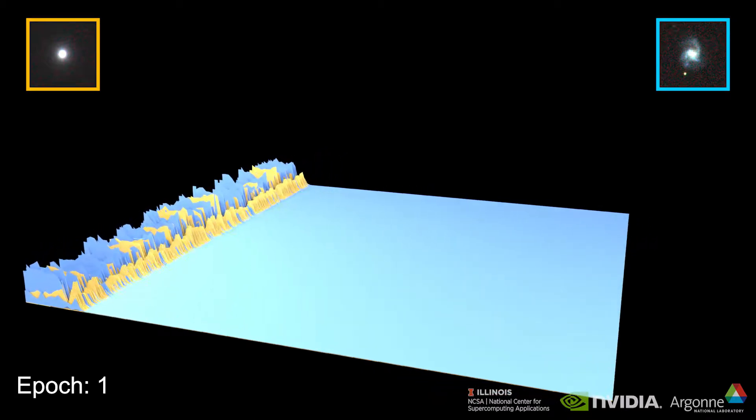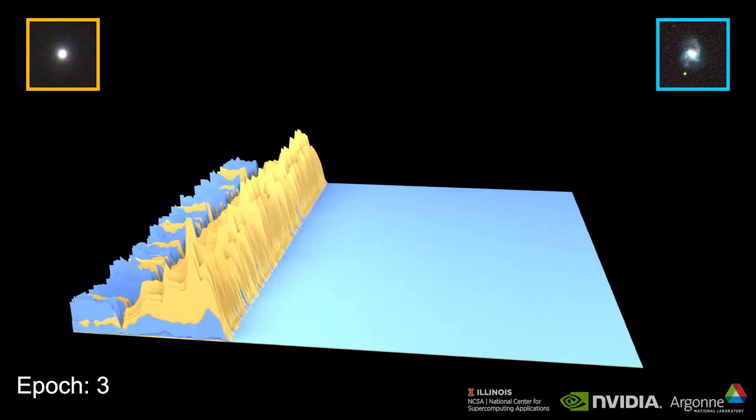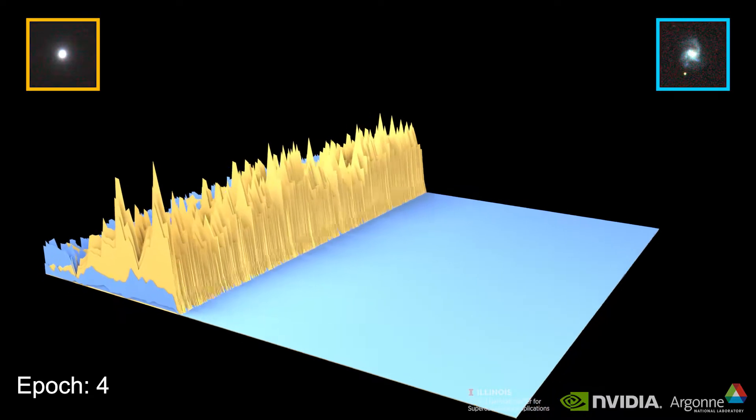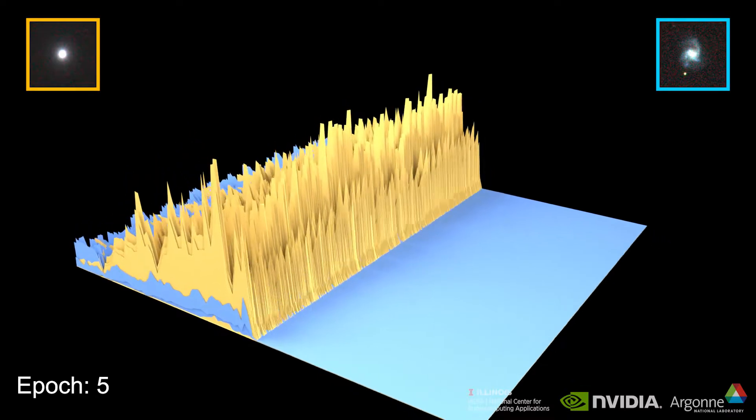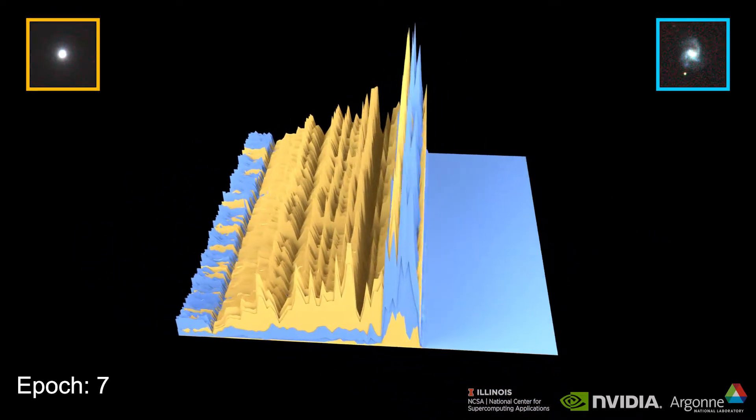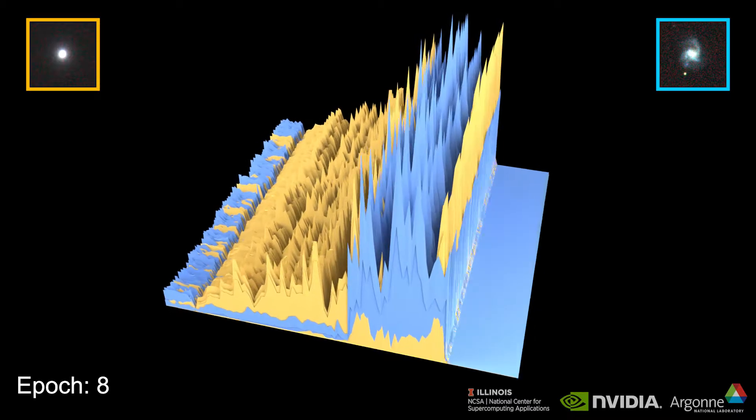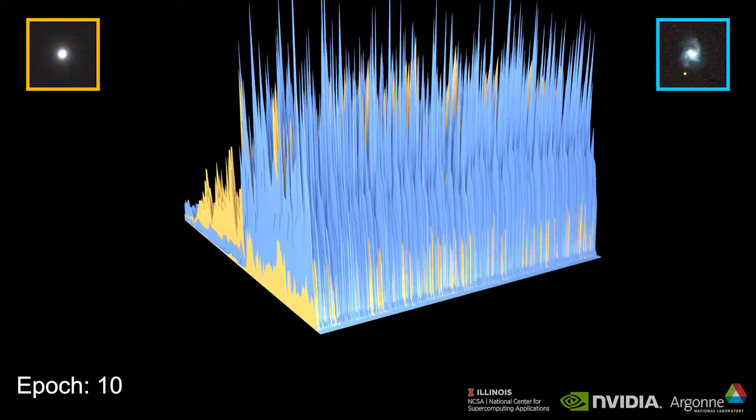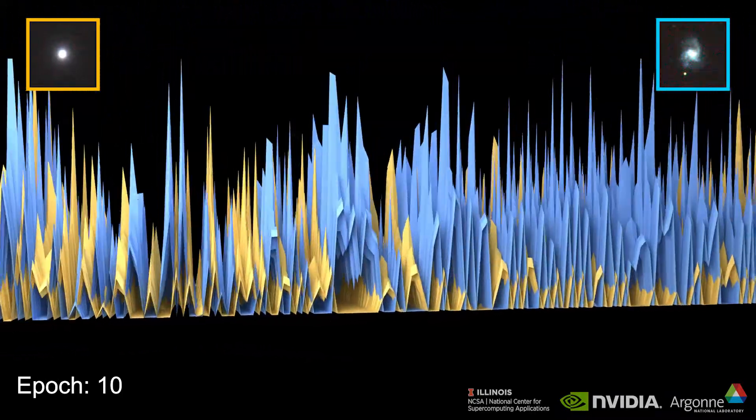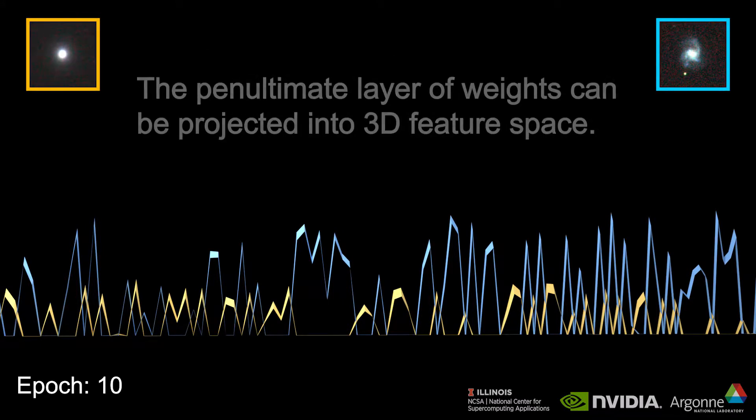Let us see the network being trained again on these two images and overlay the outputs to highlight the differences at different stages. Expanding out the final layer in the network when it is fully trained, we can clearly see the difference between the network's response to the spiral and elliptical galaxies.